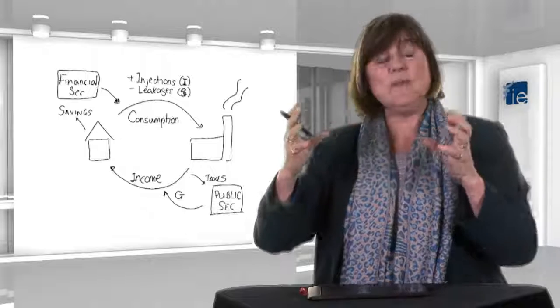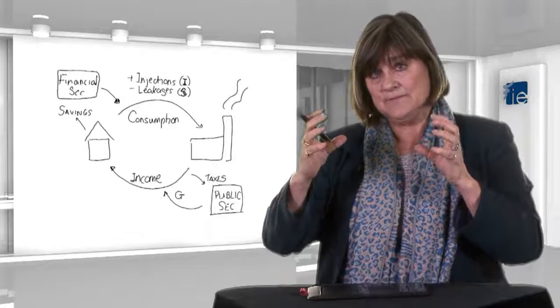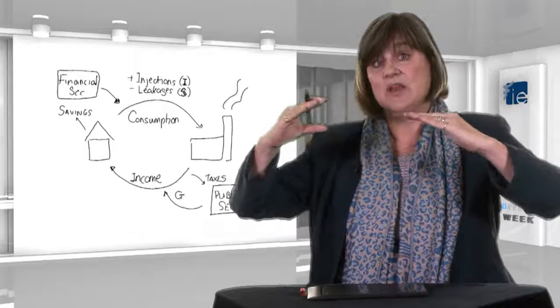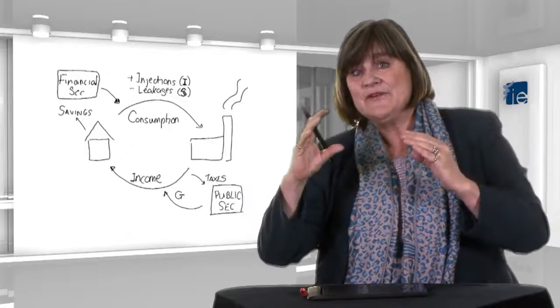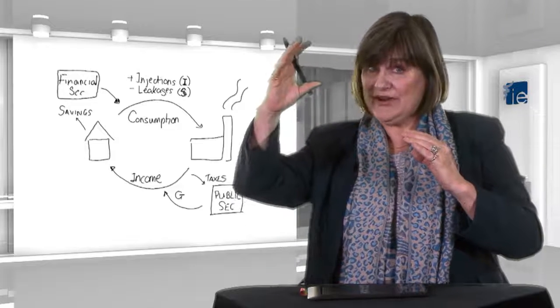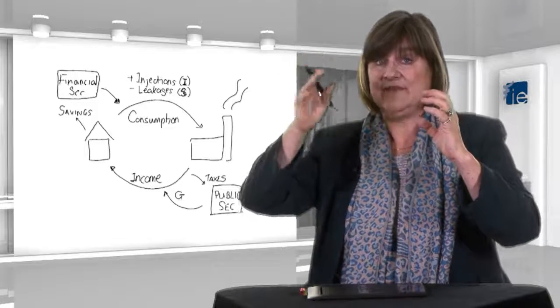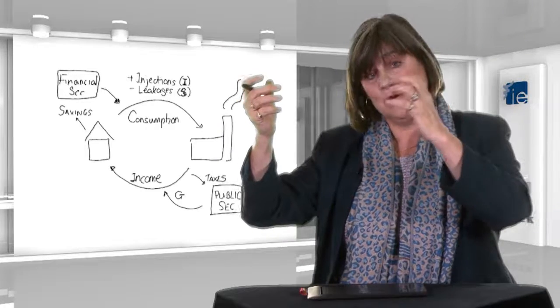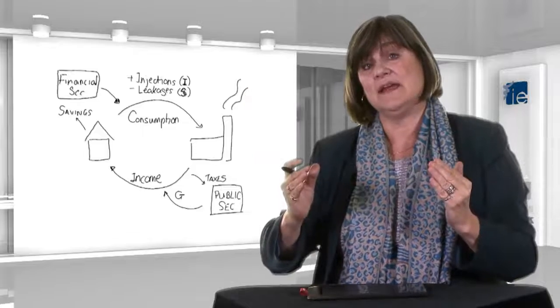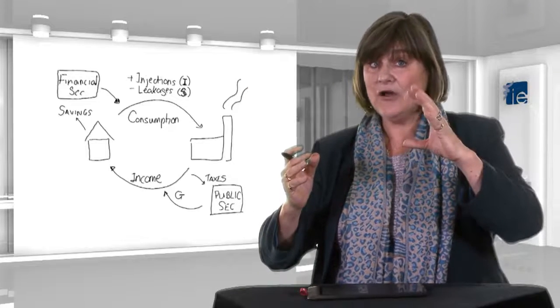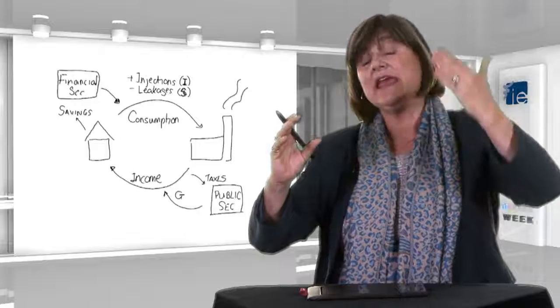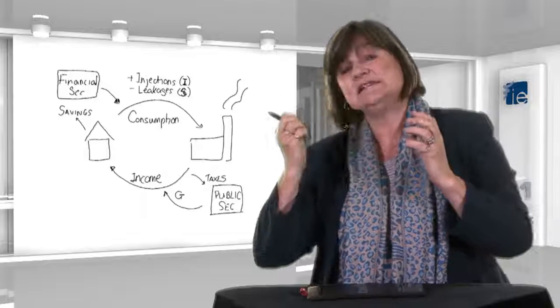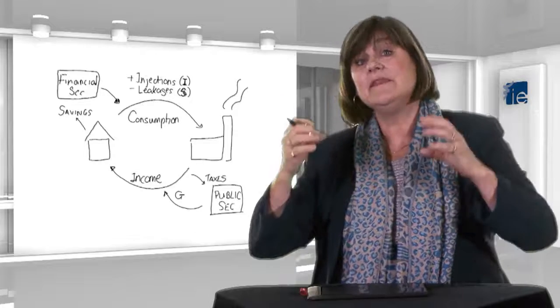And again, now when we put all these together, we see that all leakages will need to equal all injections for the economy to be stable. If all leakages are bigger than all injections, in other words, if savings and tax together are taking more out of the economy than government spending and investment are bringing in, the economy will shrink. If all injections are bigger than all leakages, so investment plus government spending together are bigger, they're putting more into the economy than what savings and tax are taking out, the economy will grow.